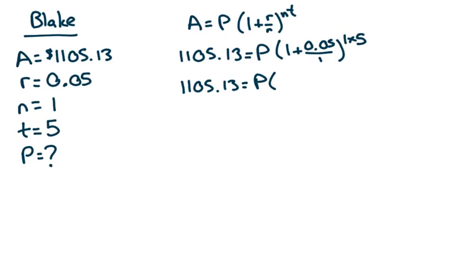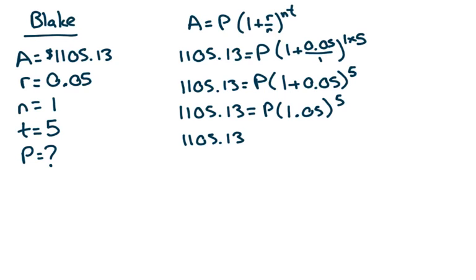Deal with the bracket. We have 0.05 divided by 1, which will be 0.05. The exponent will be 5. Still in the bracket for the next step. 1 plus 0.05 is 1.05, still to the power of 5. We can work that out now. 1.05 to the power of 5. 1.27628.